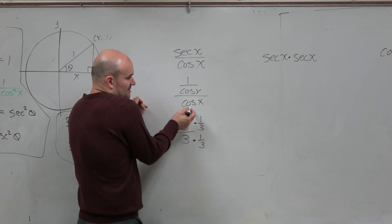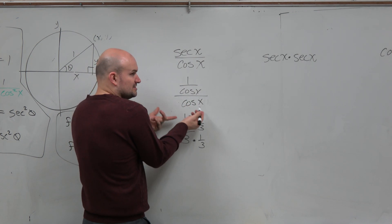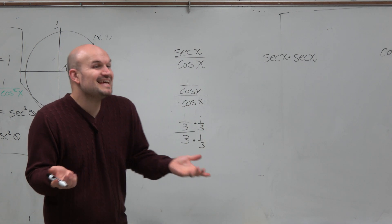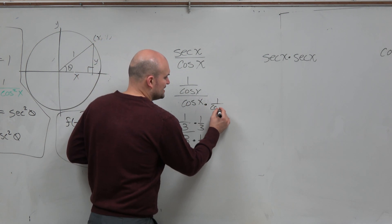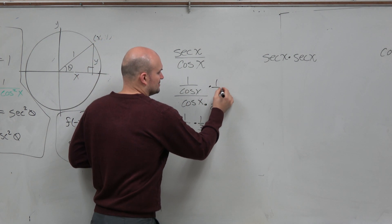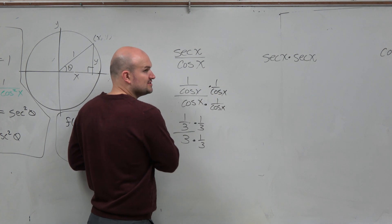Now, you could write it almost. I don't know. What's the reciprocal of cosine? Secant. Secant. Now, you could write this as secant, or it might just be easier to write it like this. And then, so what do we get?